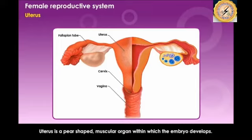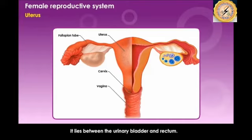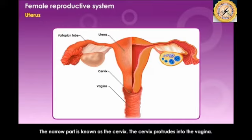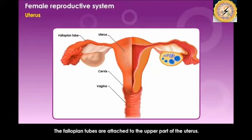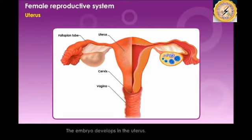The uterus is a pear-shaped muscular organ within which the embryo develops. It lies between the urinary bladder and the rectum; its upper part is wide and the lower part is narrower. The narrow part is known as the cervix, which protrudes into the vagina. The fallopian tubes are attached to the upper part of the uterus, and the highly muscular wall is lined by a layer of cells forming the endometrium. The embryo develops inside the uterus.